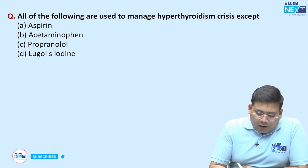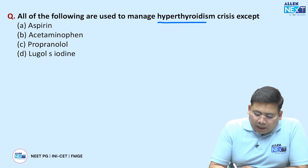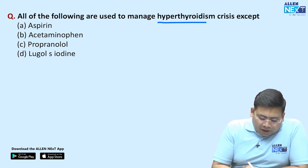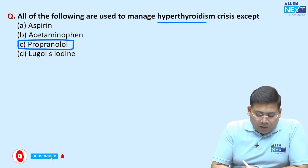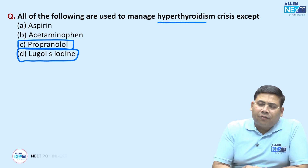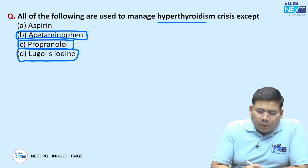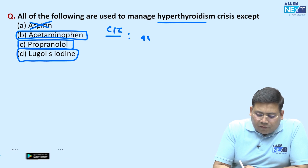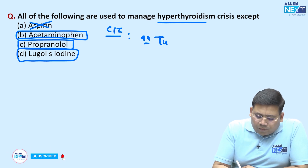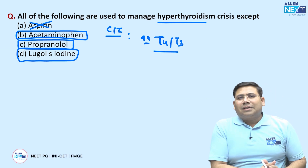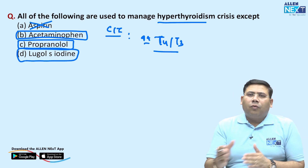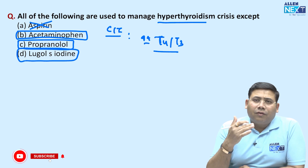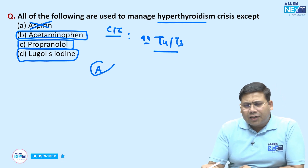Next, which of the following is used to manage hyperthyroid crisis except? For thyroid storm: propranolol controls the rate and rhythm, Lugol's iodine induces negative reinforcement, and acetaminophen reduces temperature. Aspirin is contraindicated because it decreases binding of thyroid hormone with protein, thereby increasing free T4 and free T3 levels and worsening the scenario. So aspirin is contraindicated here.